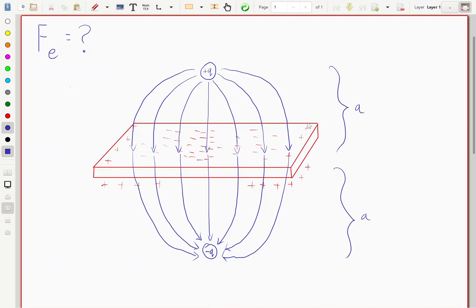And as a result, we can model the force between a positive charge and a plate a distance a away as the same thing as a positive charge plus q and a negative charge minus q a distance 2a away.